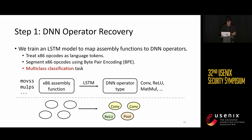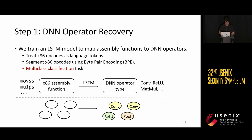In the first step, we try to map assembly functions to DNN operators. To do so, we train an LSTM model to treat x86 opcodes as language tokens, and use the byte-pair encoding method — initially proposed in the NLP field — to segment x86 opcodes. Basically, we view this as a typical multi-class classification task. After this step, each function will have a label indicating its operator type.